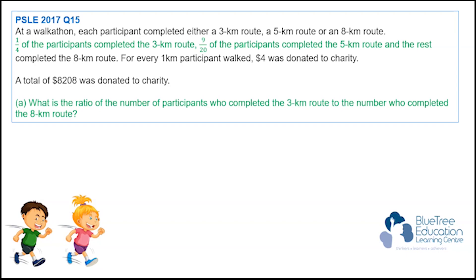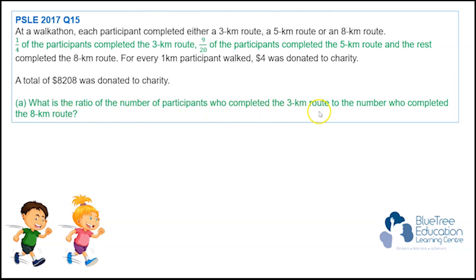At the Walkathon, each participant completed either a 3km route, a 5km route, or an 8km route. One quarter of the participants completed the 3km route. 9/20 of the participants completed the 5km route, and the rest completed the 8km route. For every 1km a participant walked, $4 was donated to charity, and a total of $8,208 was donated to charity. For part A, what is the ratio of the number of participants who completed the 3km route to the number who completed the 8km route?